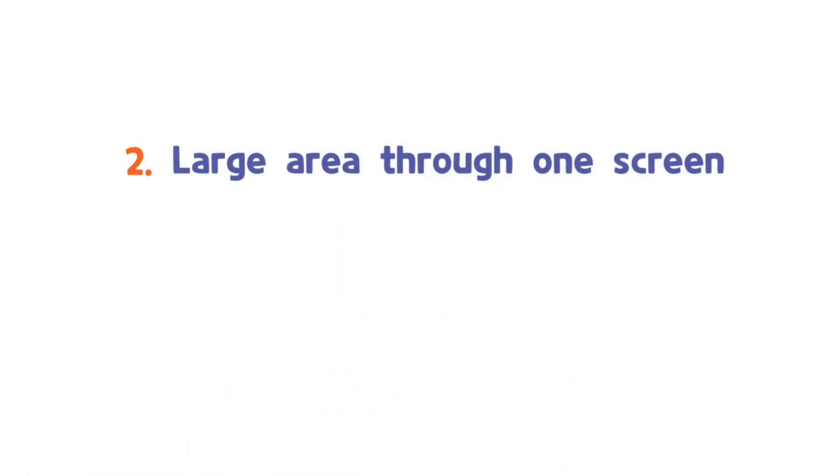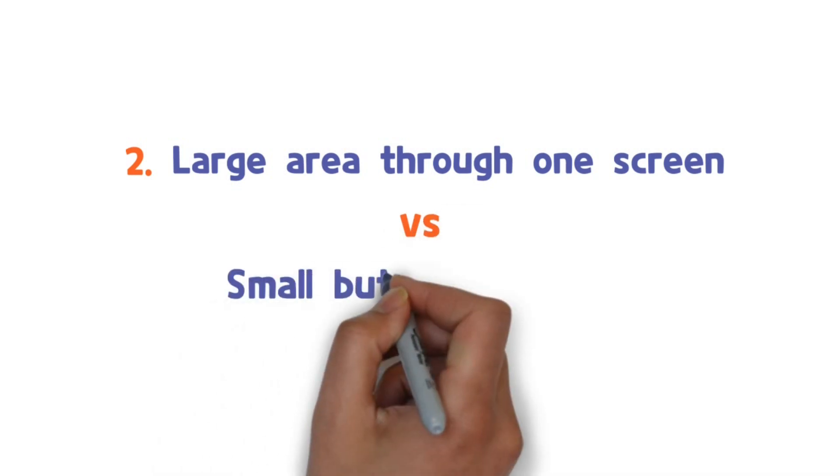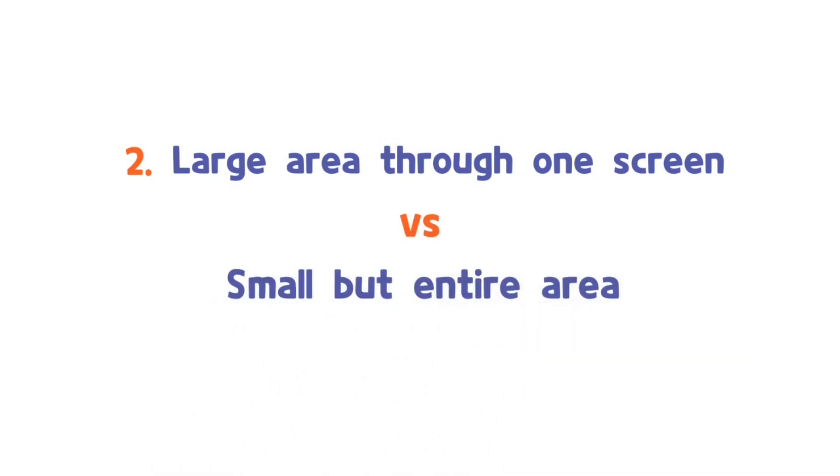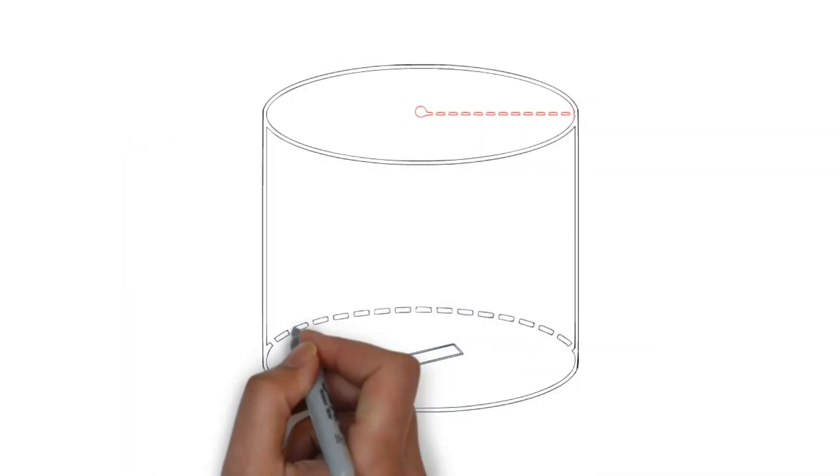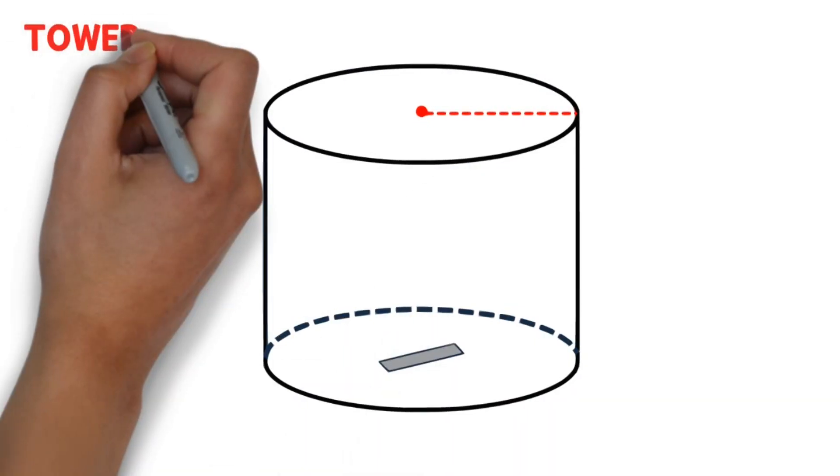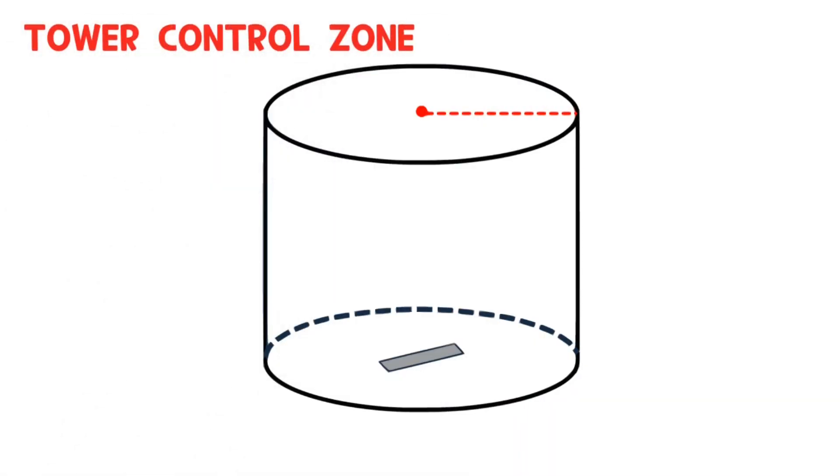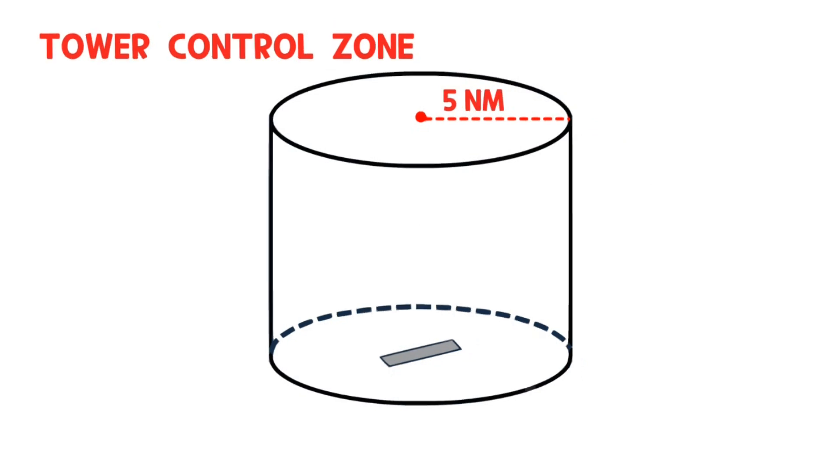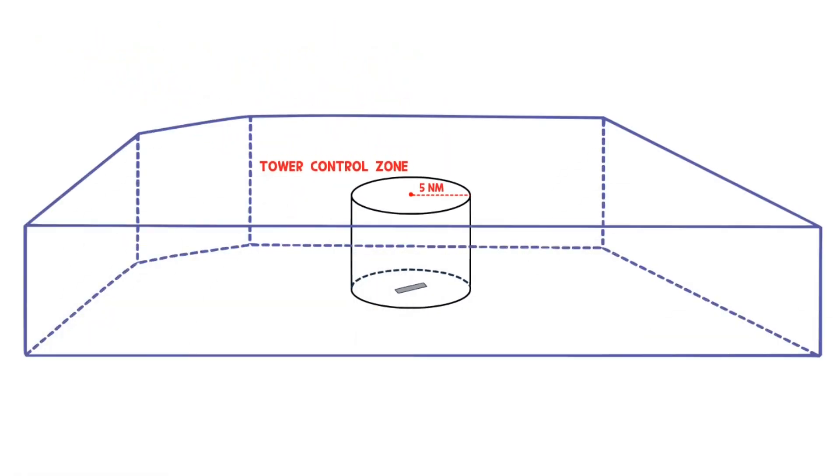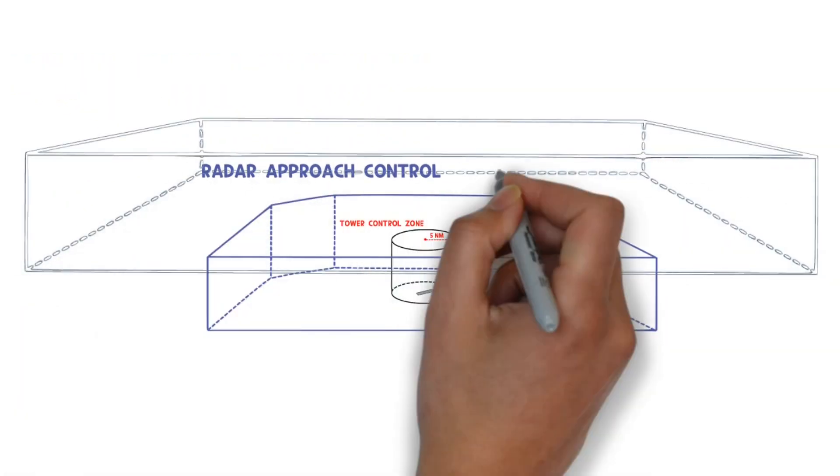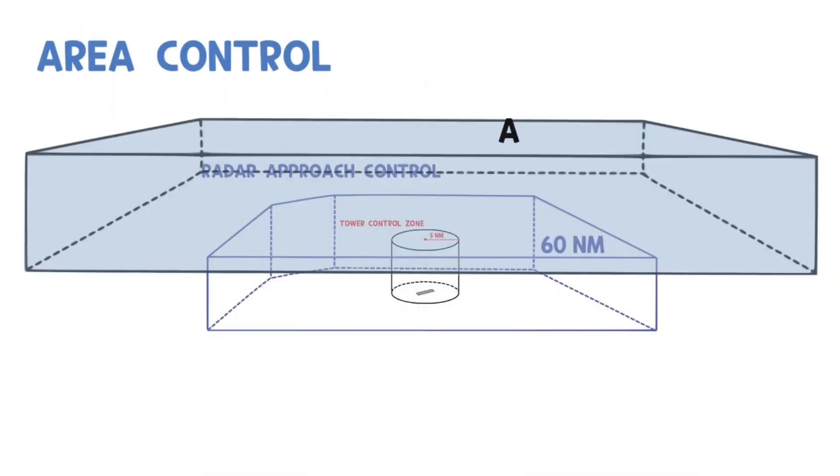Large area through one screen versus small but the entire area. Although there are differences among countries, the tower controller usually controls the airport radius of 5 miles, the radar approach controller controls the airport radius up to 60 miles, and the ACC controller controls more. But there is something interesting here.